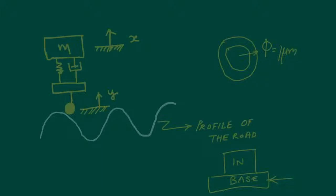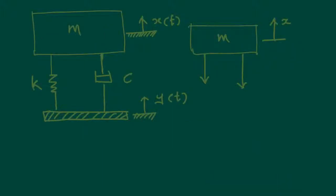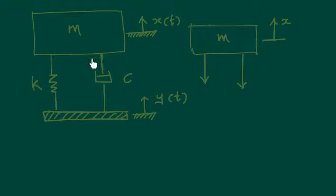Both real-life examples can be mathematically idealized in the same way: the base has a known displacement y(t), and there is a stiffness and a damper in the system. The mass represents the vehicle in the first example and the measuring instrument in the second example.